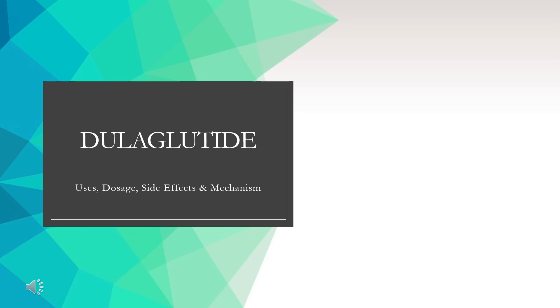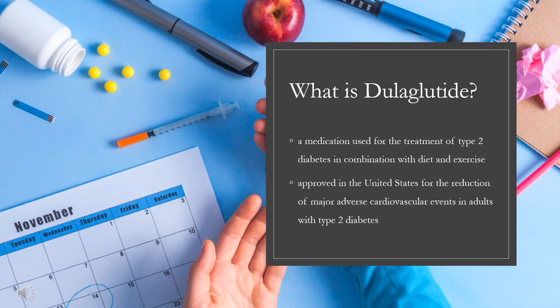Dulaglutide is a GLP-1 agonist used to manage type 2 diabetes mellitus. Dulaglutide, sold under the brand name Trulicity among others, is a medication used for the treatment of type 2 diabetes in combination with diet and exercise. It is also approved in the United States for the reduction of major adverse cardiovascular events in adults with type 2 diabetes who have established cardiovascular disease or multiple cardiovascular risk factors. In 2020, it was the 96th most commonly prescribed medication in the United States, with more than 7 million prescriptions.